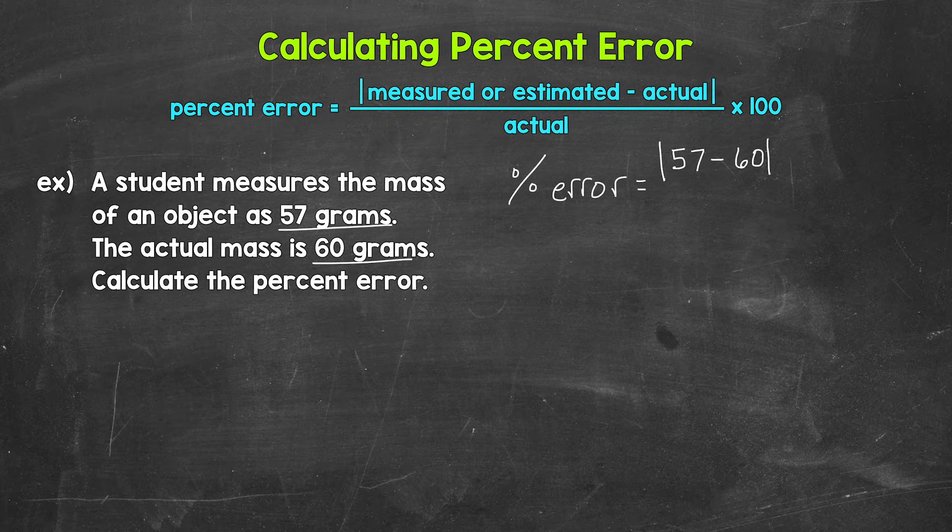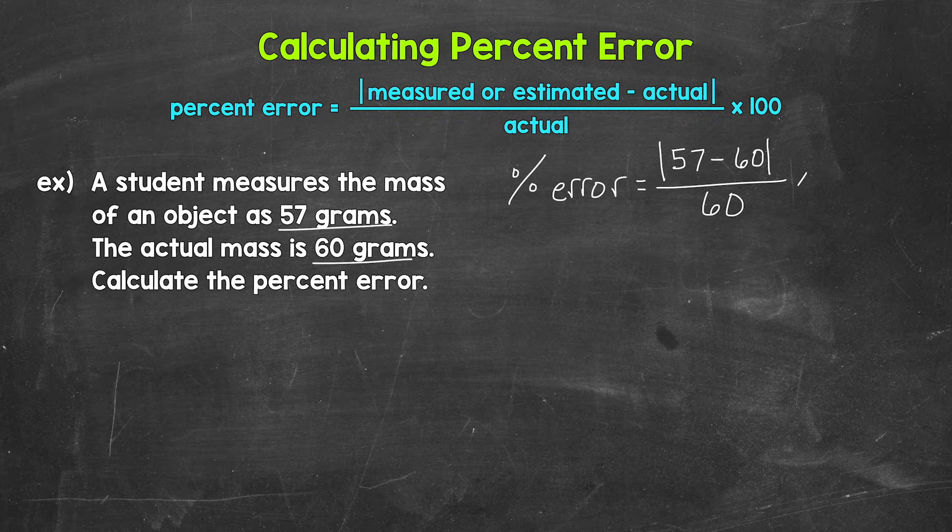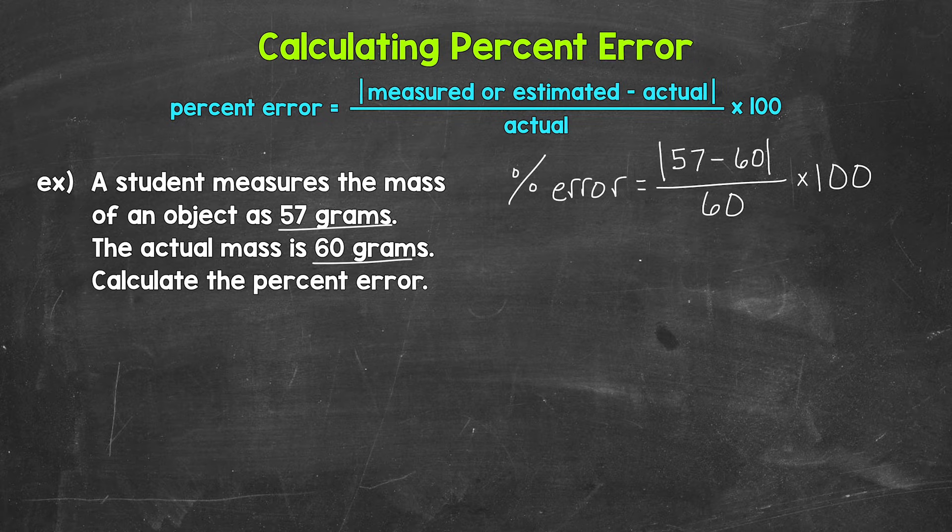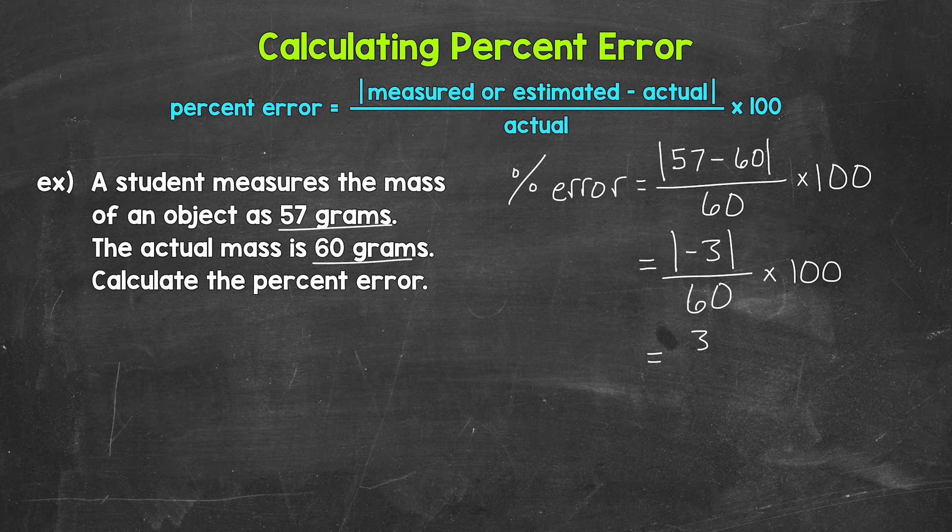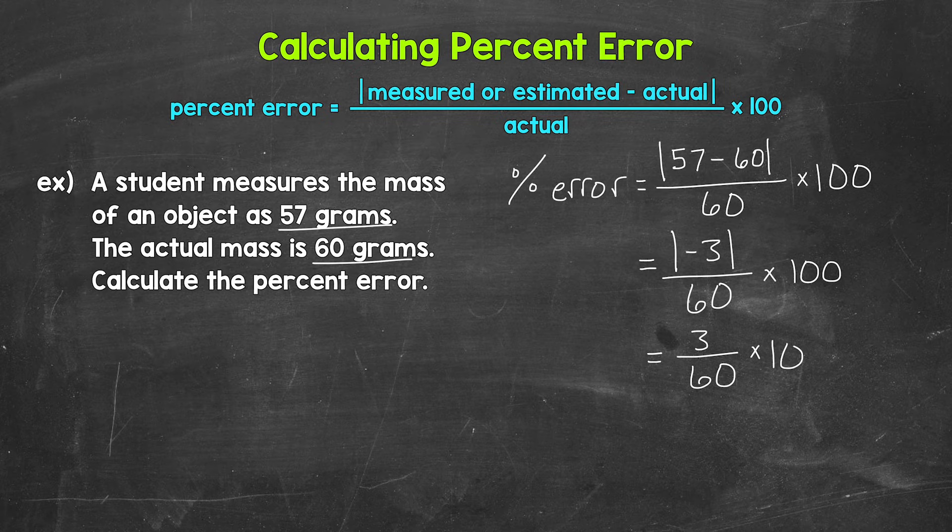And then we multiply by 100. And now we can work through this starting with the subtraction. So we have 57 minus 60, that gives us negative three. And we are dividing that by 60 and multiplying by 100. Now we take the absolute value of negative three, which is three, positive three. So three divided by 60 times 100.